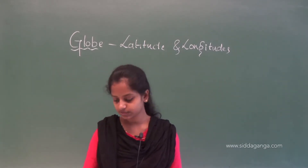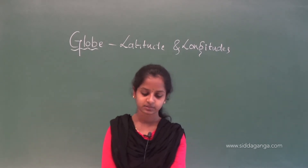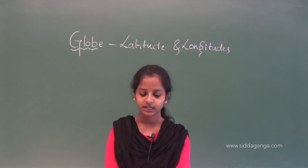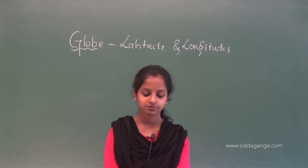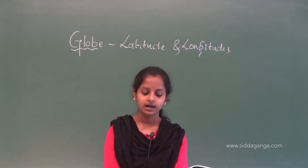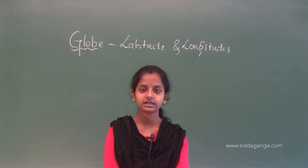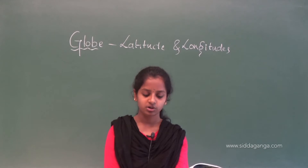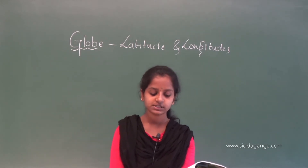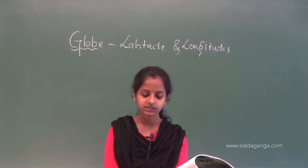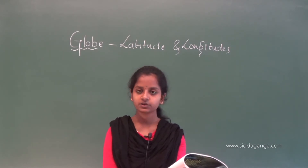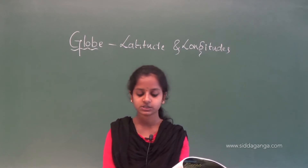Now in this class, we are going to see about the longitudes. To fix a position of a place, it is necessary to know something more than the latitude. For example, the Tonga Islands and the Mauritius Islands are situated on the same latitude — 20 degrees south.